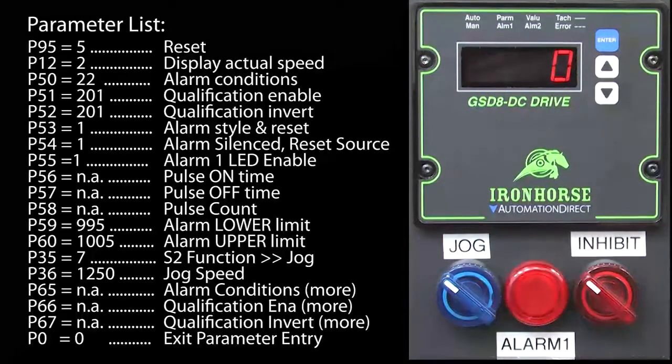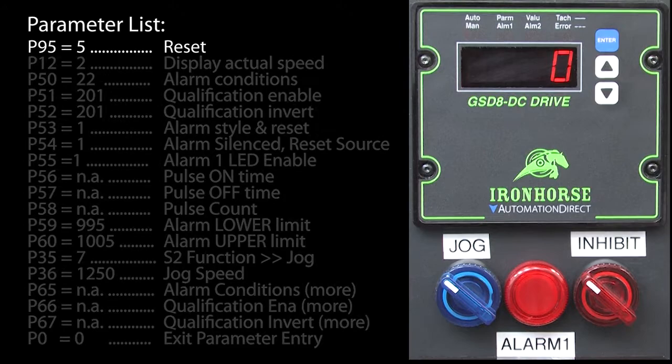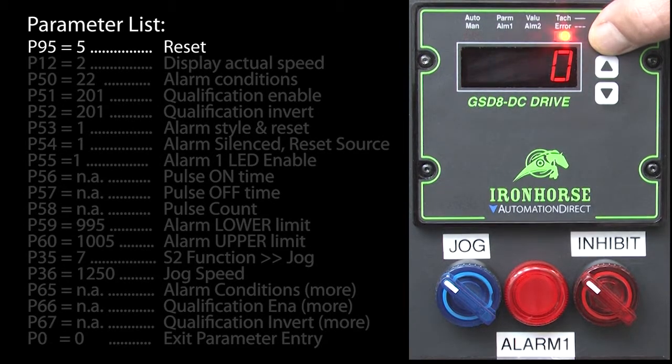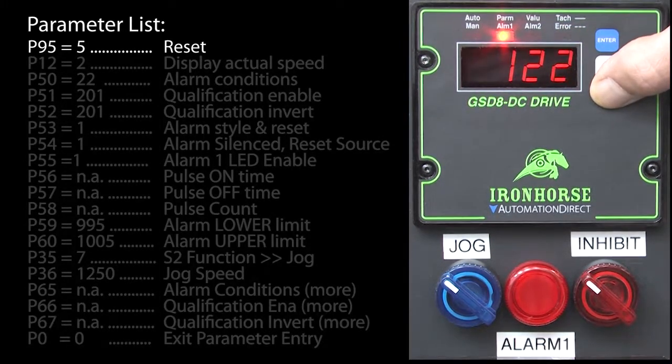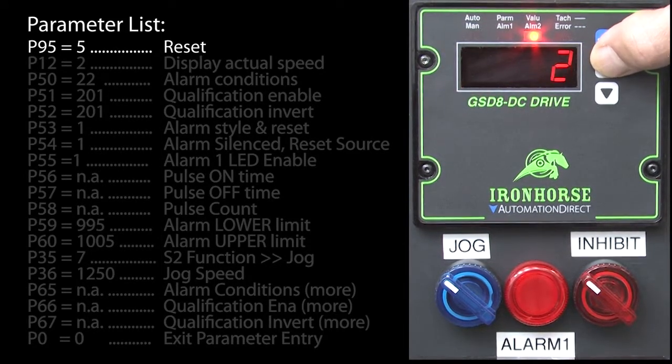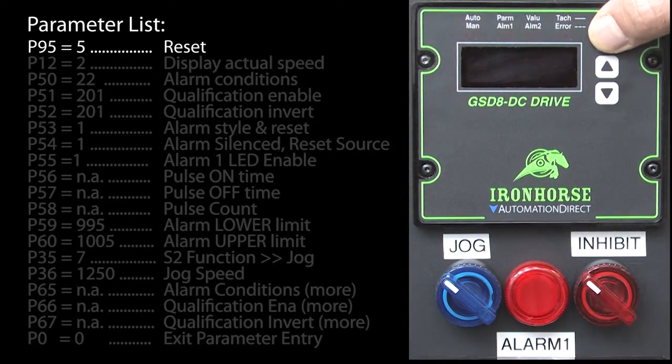Here are the parameters we are going to use – let's take them one at a time. First, let's reset the drive to factory default so we are all starting from the same place. Go to parameter 95, enter a 5, up arrow to confirm.